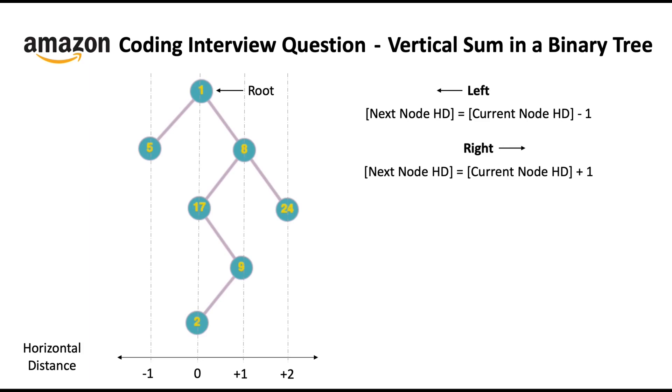If you consider the horizontal distance of the root node, which is a node with value 1 to be 0, then if you move towards the left node, which is 5, its horizontal distance will be 0 minus 1 equal to minus 1. Now there are no nodes further. So we will move towards the right node, which is 17, its horizontal distance will be 1 minus 1 equal to 0, and so on and so forth.